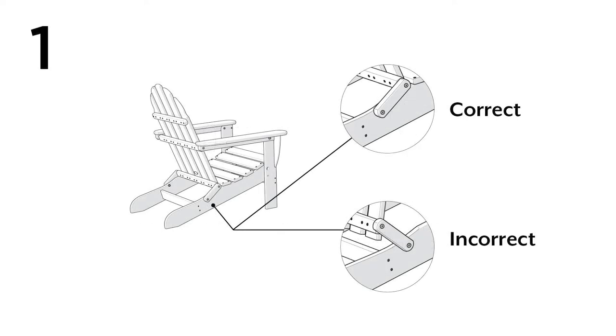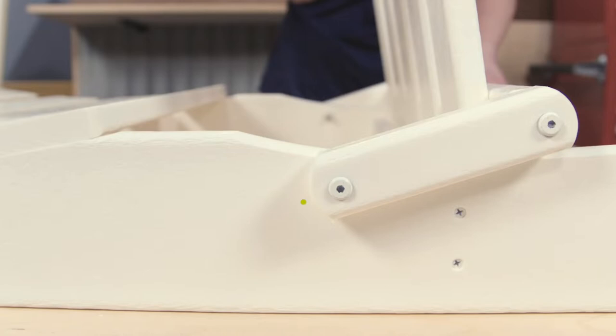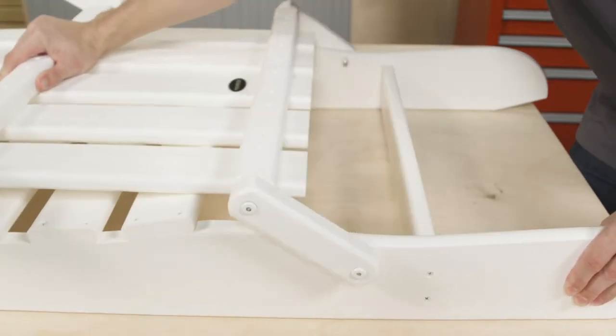Begin by unfolding the chair assembly as shown. You may find it helpful to loosen the bolts in the pivot spacer in order to make unfolding the assembly easier.